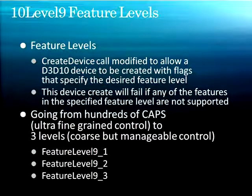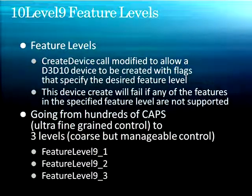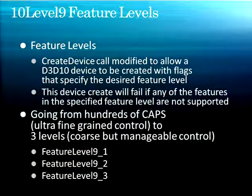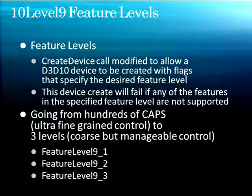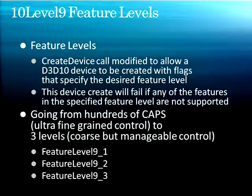Basically what we're doing here is we're going from hundreds — maybe thousands — of these CAPS bits, which is very fine-grained control, to three levels, which is coarse but manageable control. And the three levels are feature level 9_1, which is the lowest feature level; 9.2, which is slightly better; and 9.3, which has slightly more features.